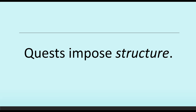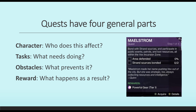Within the structure, we can think of quests as having four different parts. One: character — who does this affect? Who is affected by this quest? Are we doing it to rescue the princess? Are we doing it to access money? Are we doing it for the king, royalty, or something else? Two: tasks — what actually needs doing? What are we doing as part of this quest? Are we defending an area? Are we bonding with a character, as in the example on the right-hand side? What exactly are we doing?